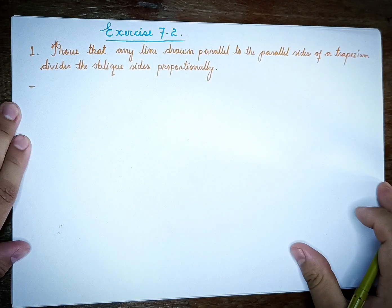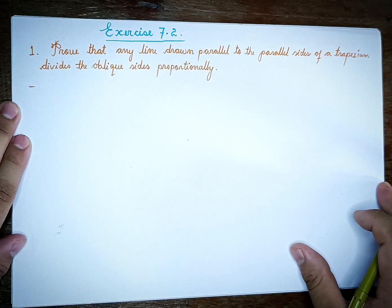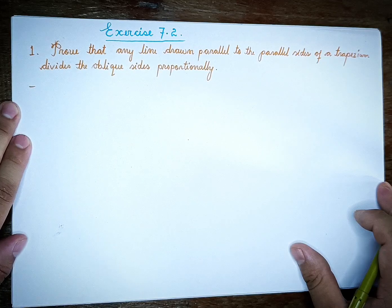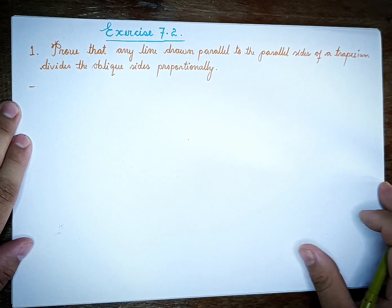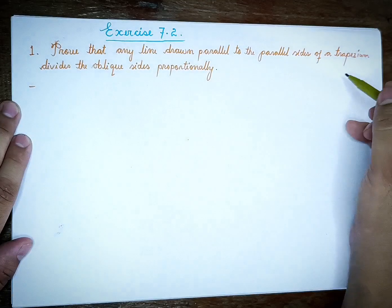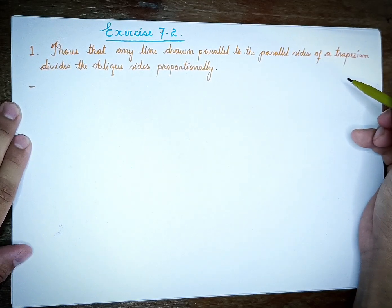Hi, I'm going to ask the question about exercise 7.2. Proof that any line drawn parallel to the parallel sides of a trapezium divides the oblique sides proportionally.